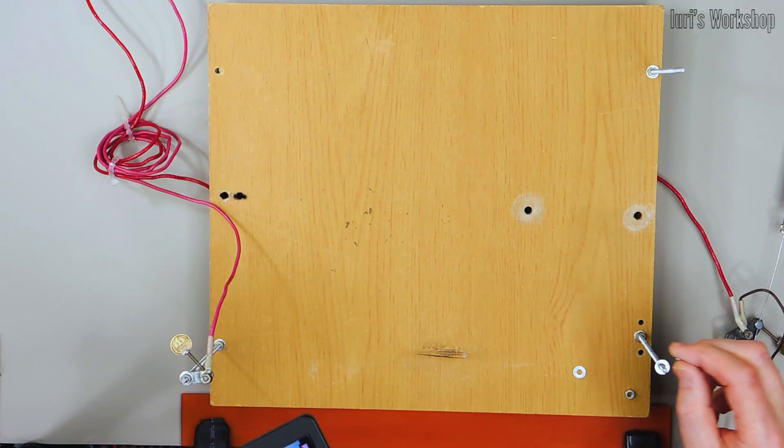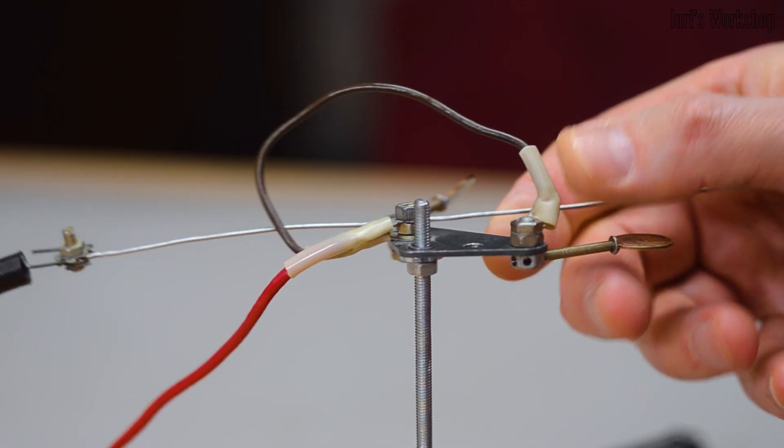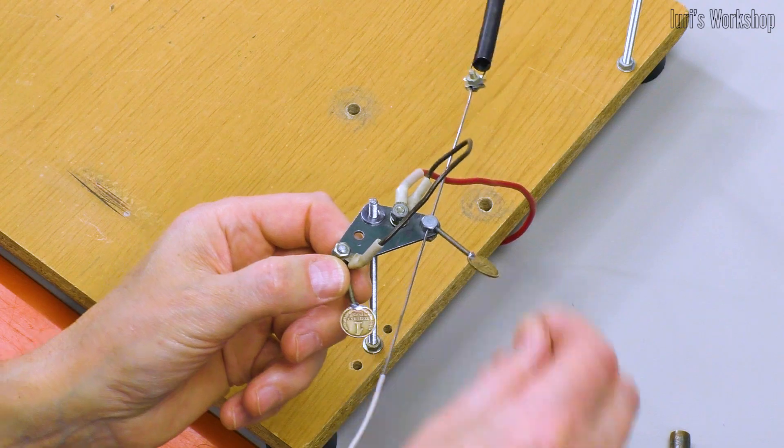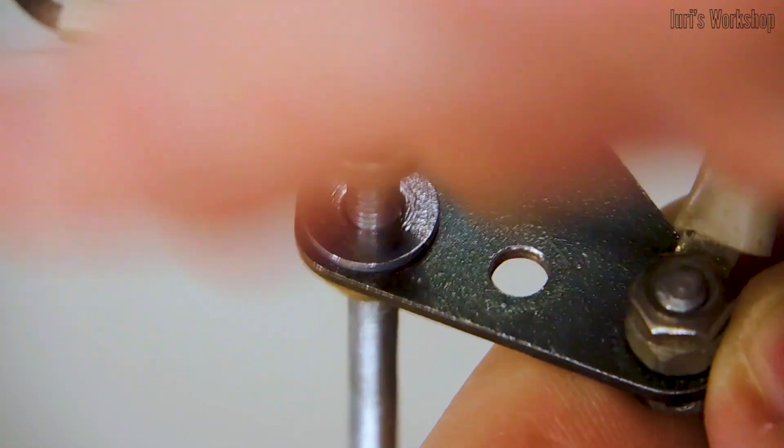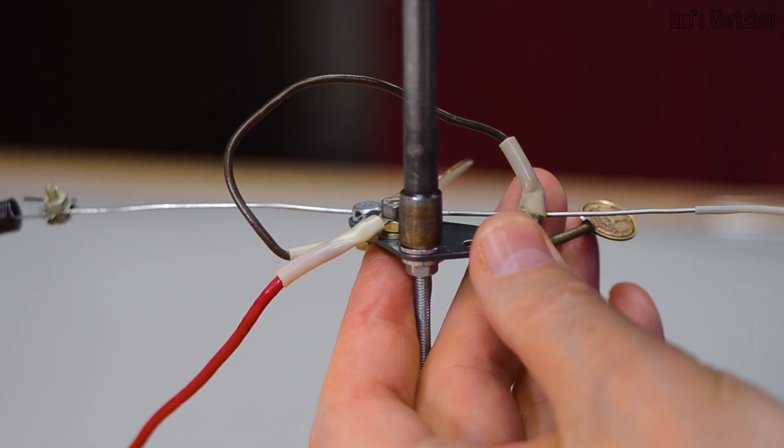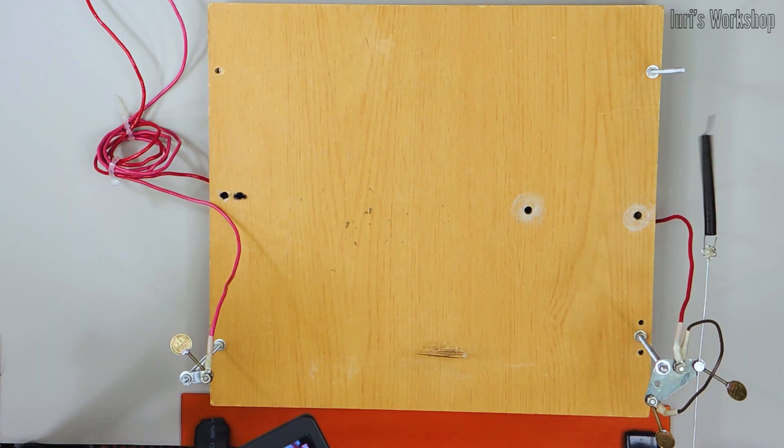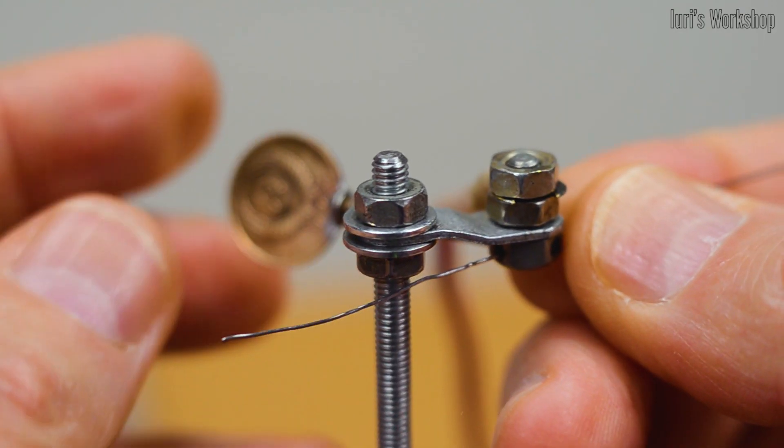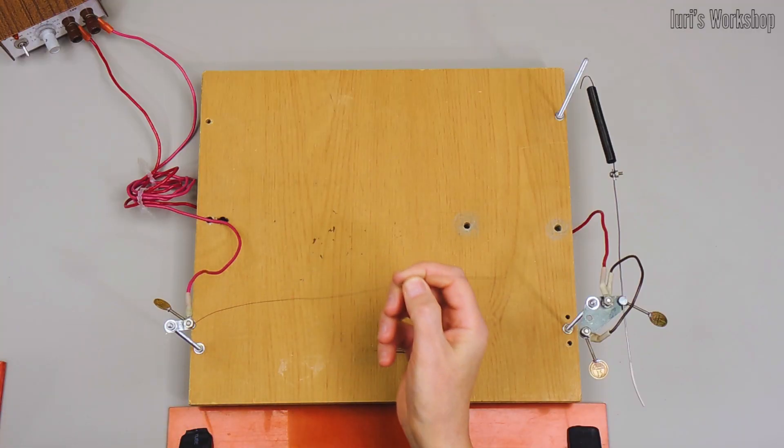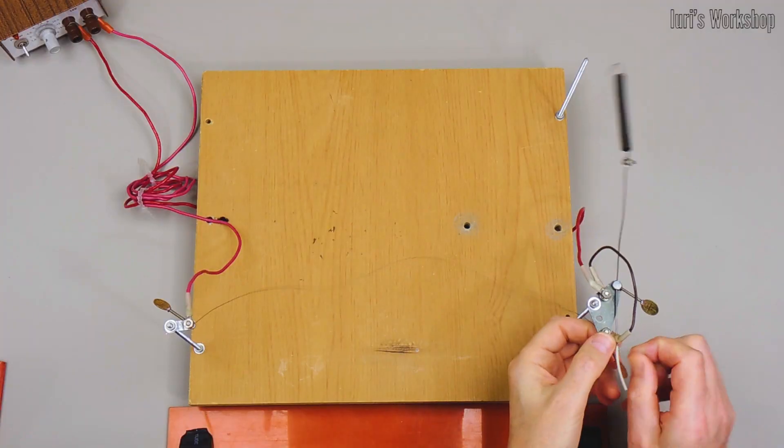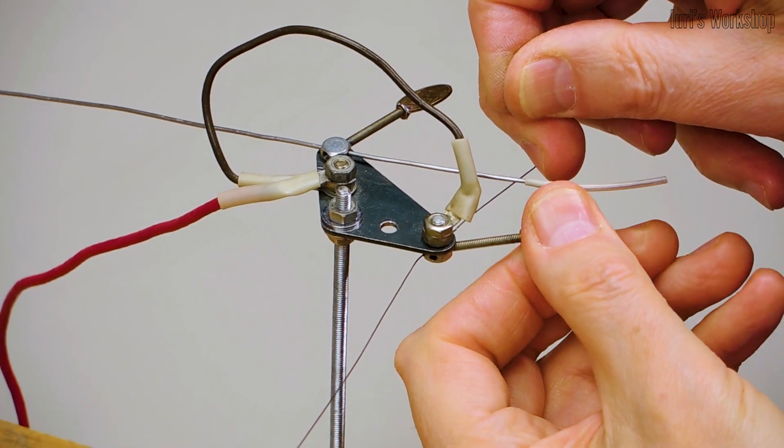The nichrome wire tensioning unit of this machine is assembled on the basis of a sliding bearing. This assembly design allows a more compact machine to be built. To secure the wire, I drilled holes and cut the thread in the screw's hex heads. The wire is tensioned by a spring.